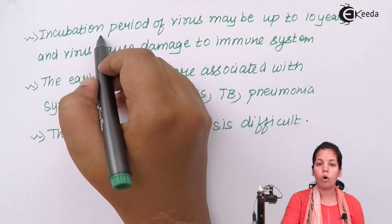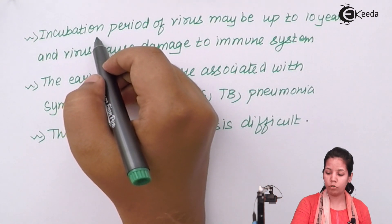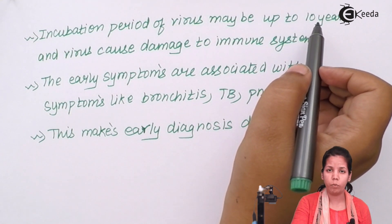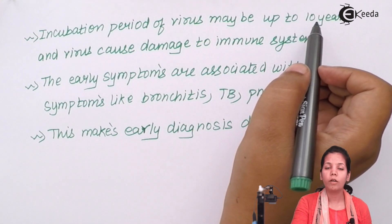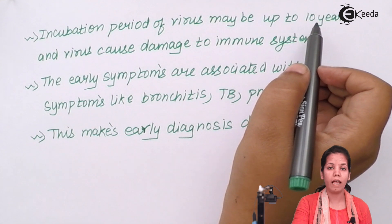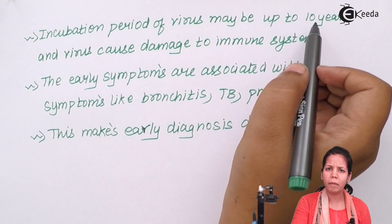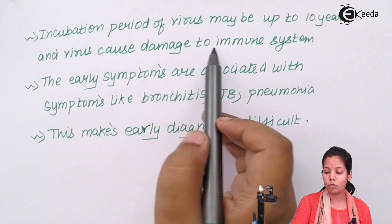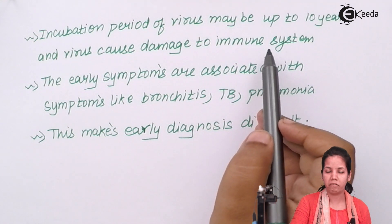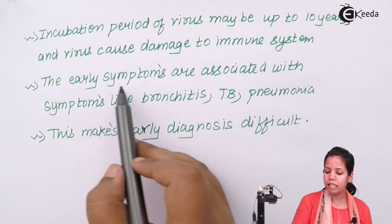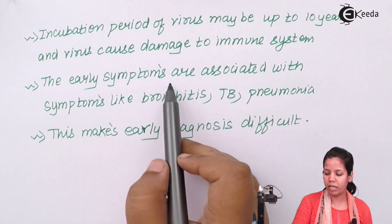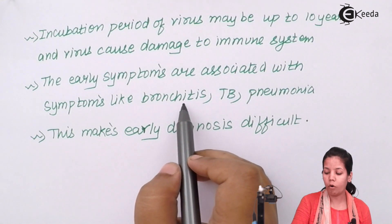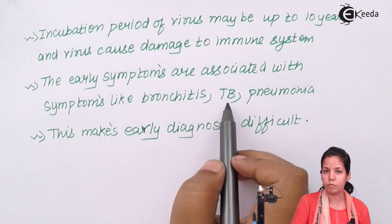The incubation period, or the time for which the AIDS virus survives in the body, may be up to 10 years. The retrovirus is not using its reverse transcriptase enzyme to convert single-stranded RNA to double-stranded DNA, and hence it is not forming any machinery or making copies — it is just present in a latent form. Early symptoms of AIDS can be associated with bronchitis, tuberculosis, or pneumonia.